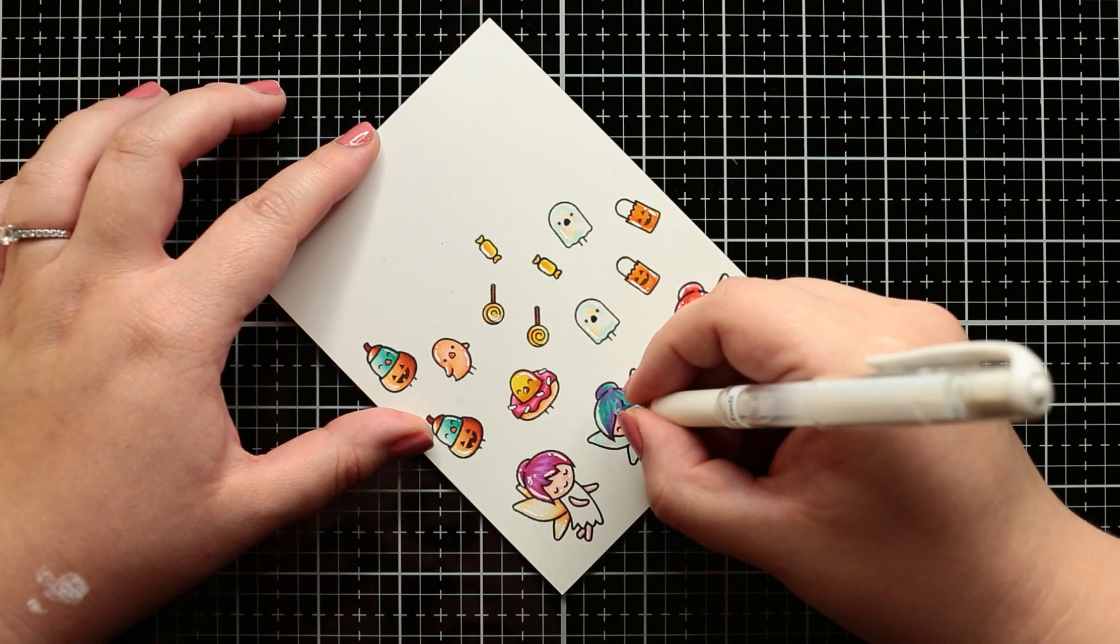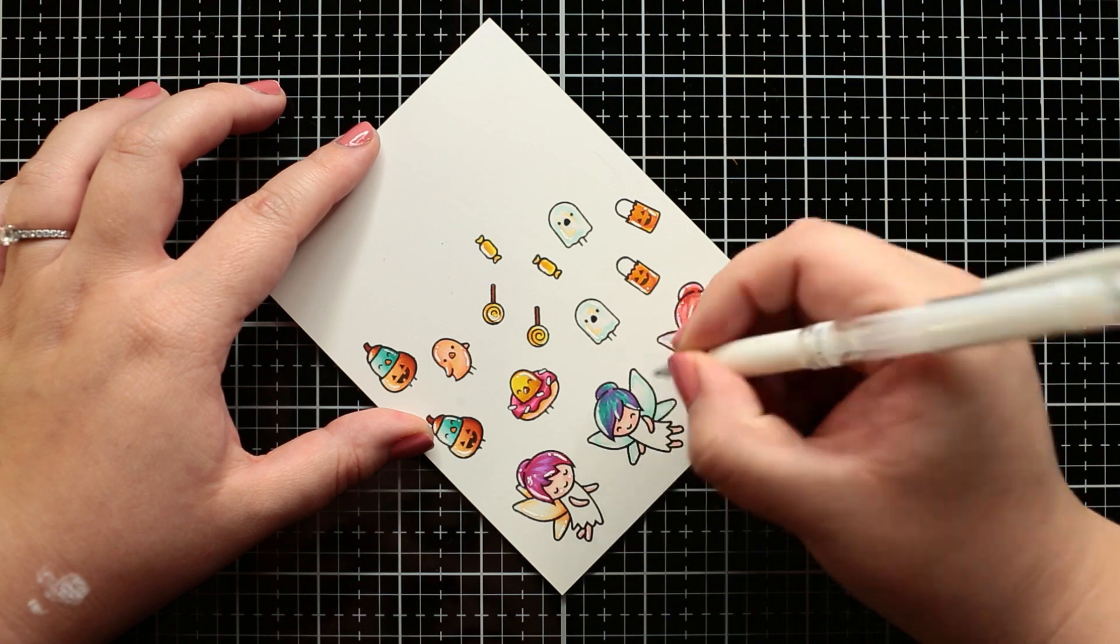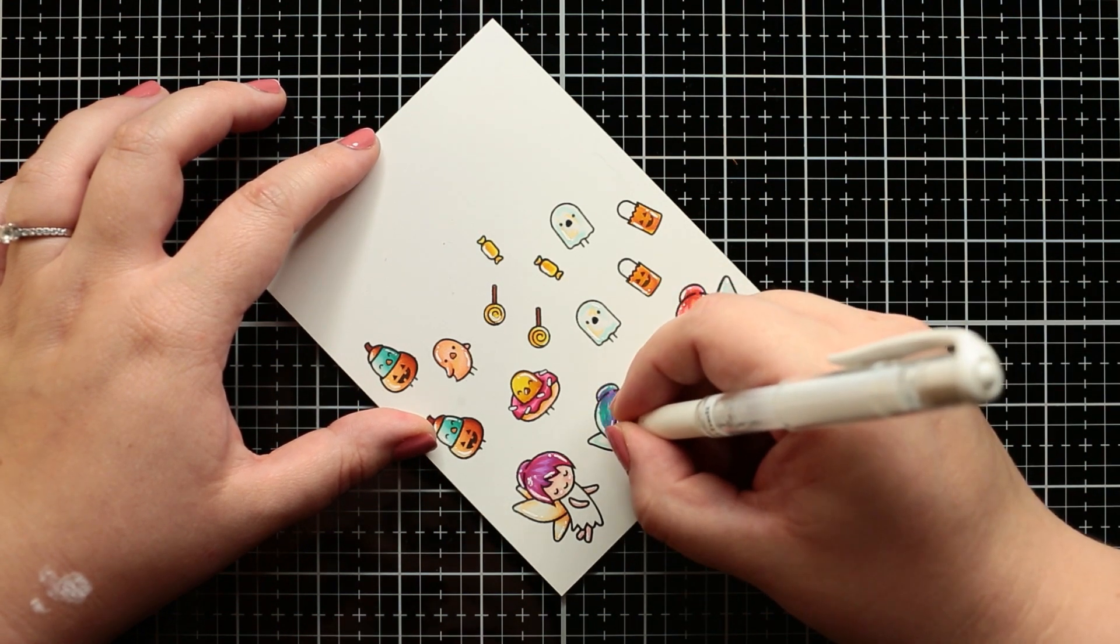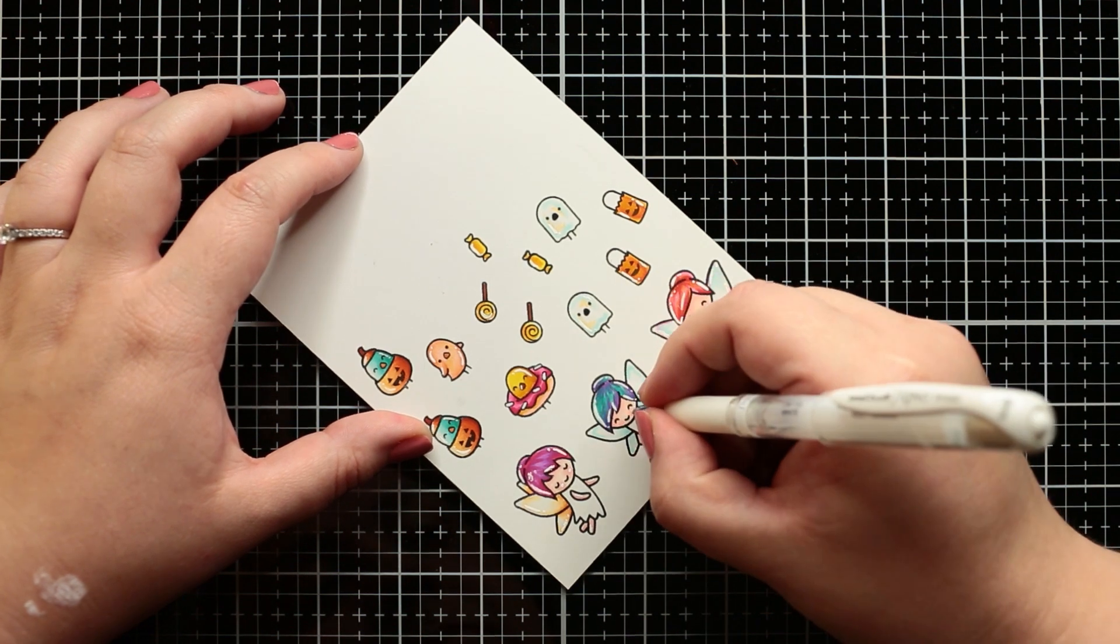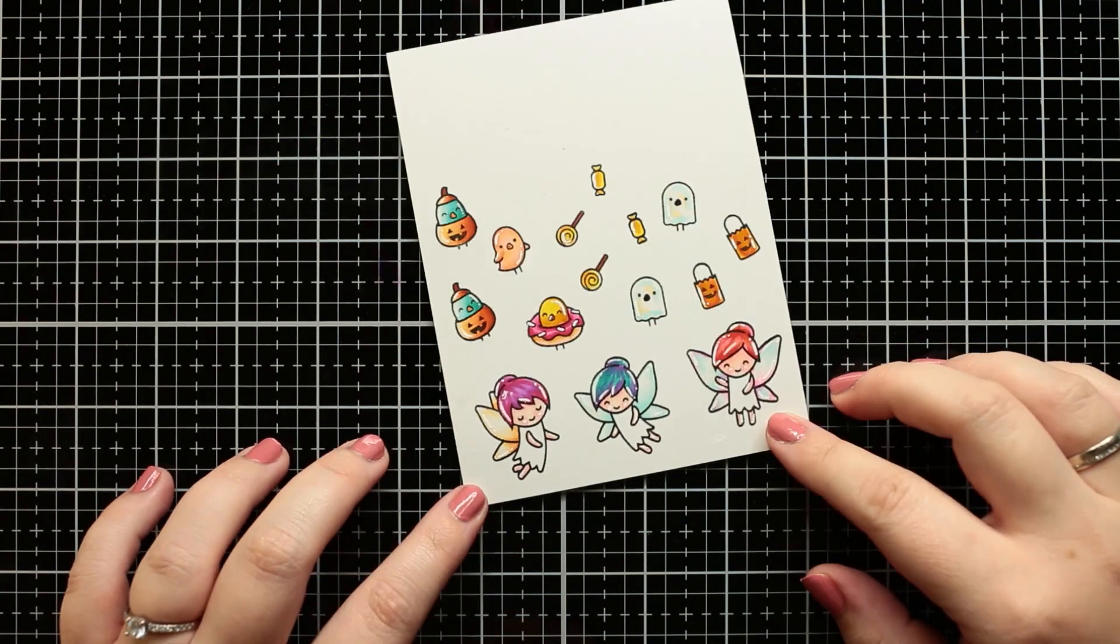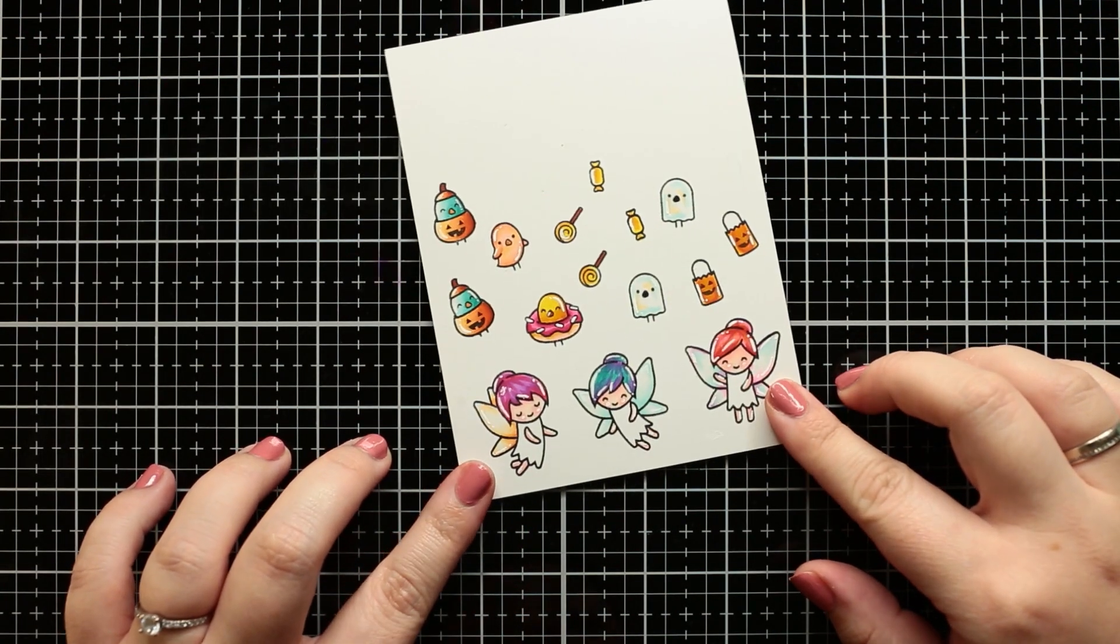When the coloring was done I added white highlights to the images to have more contrast. It helps really a lot to pop out the image. As you can see the dress is not colored. This is because I want to foil them.